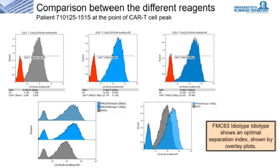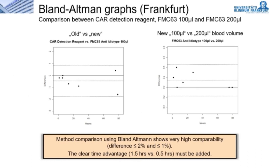In Bland-Altman statistics, the results of the original stain versus FMC63 antibody as well as the usage of 100 versus 200 microliters of blood as starting volume are plotted. The results are very comparable, showing only differences of ≤2% in the comparison of the original stain versus direct labeling with FMC63. In the comparison of different starting blood volumes, the difference is even less than 1% for FMC63. With regard to working time, the preparation procedure with direct labeling of FMC63 is also greatly reduced from 2 hours to just under half an hour, and fewer washing steps reduce cell losses, which is important when measuring near the detection limit.